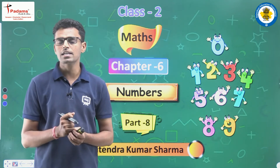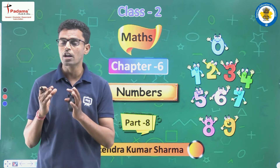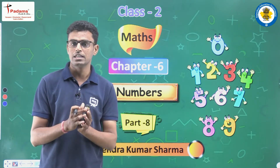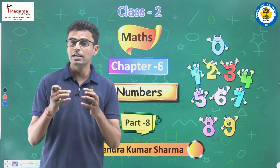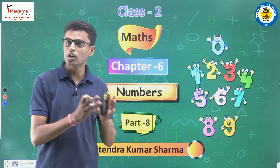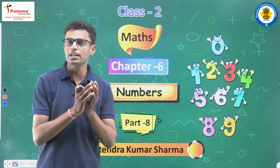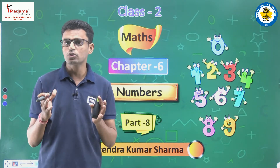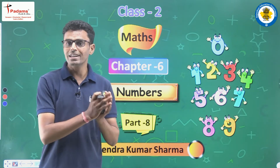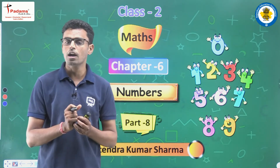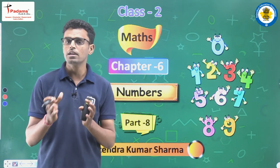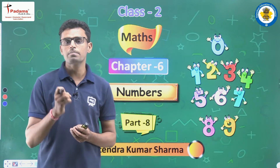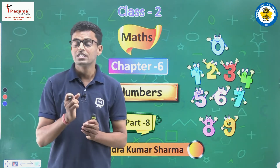In today's class, we will move the chapter forward and learn about groups of 10 things. We will see 10 and then 10 more — what does that make — and understand how adding groups of 10 helps us continue counting using bundles. Before we start, let me ask you a small question.